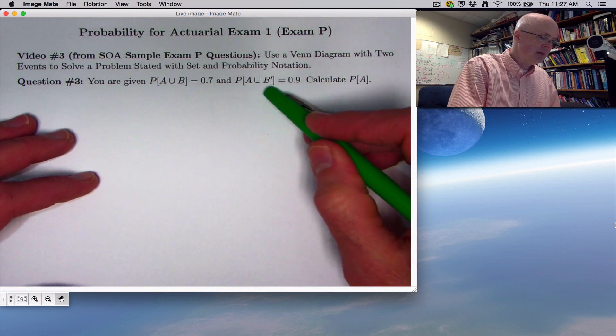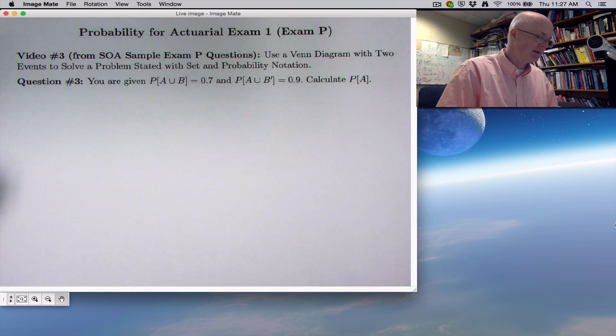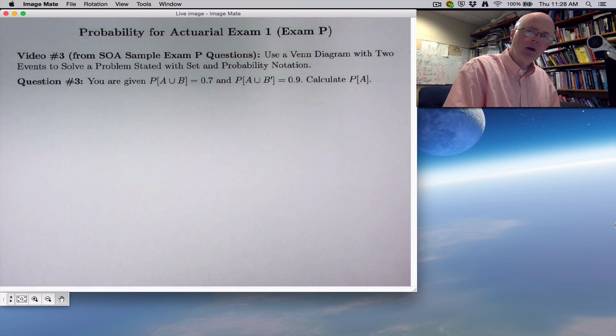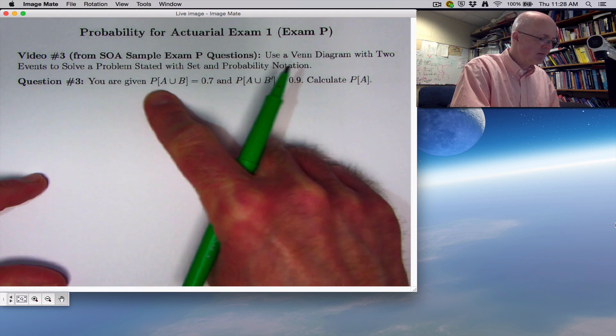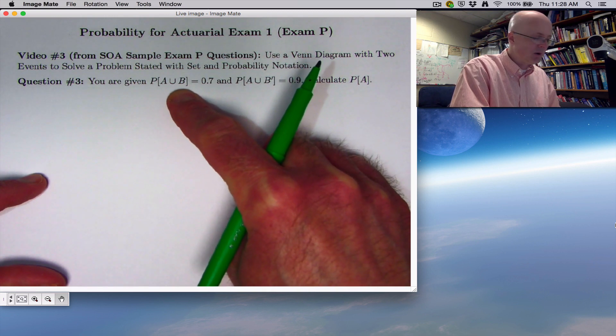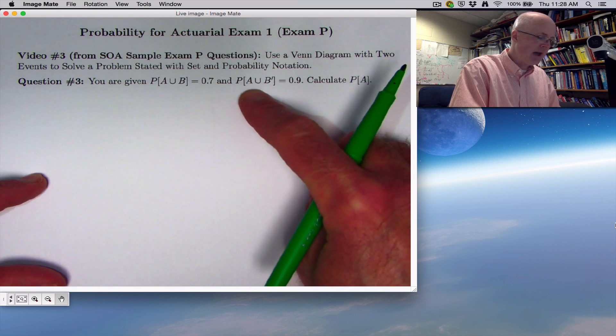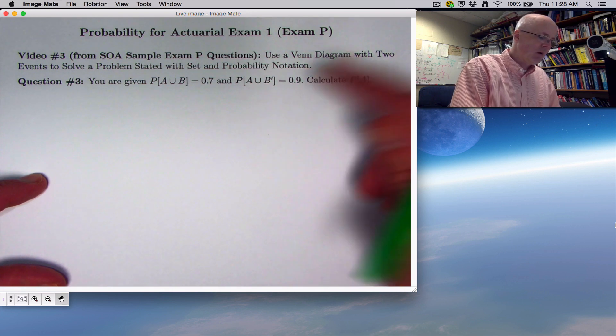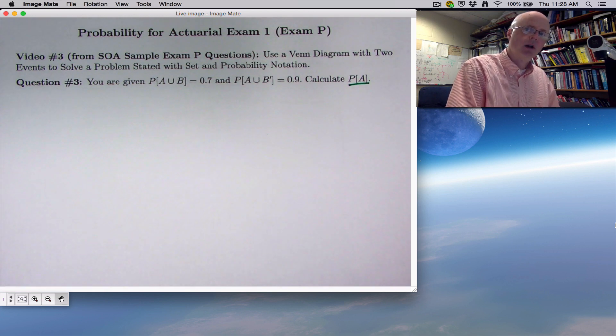So, A union B prime means either A has occurred or B has not occurred, or both of those conditions, A occurring and B not occurring at the same time. So, we're given the values of these probabilities. The P here represents probability. It's kind of like function notation. P is like the function name. A union B here is like the input. You're saying the probability of A or B or both occurring equals 0.7. This is the output of the function. Same kind of thing here. The probability of A or not B occurring, or both, is equal to 0.9. We want to calculate this, the probability of A occurring.